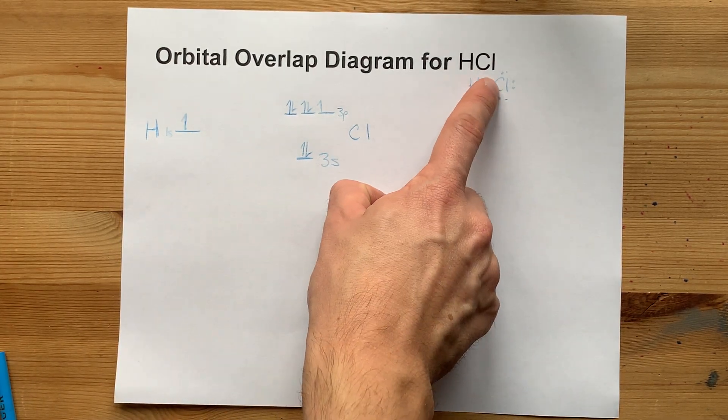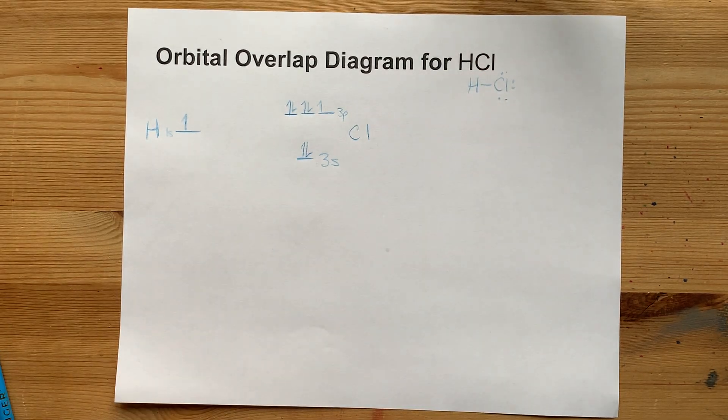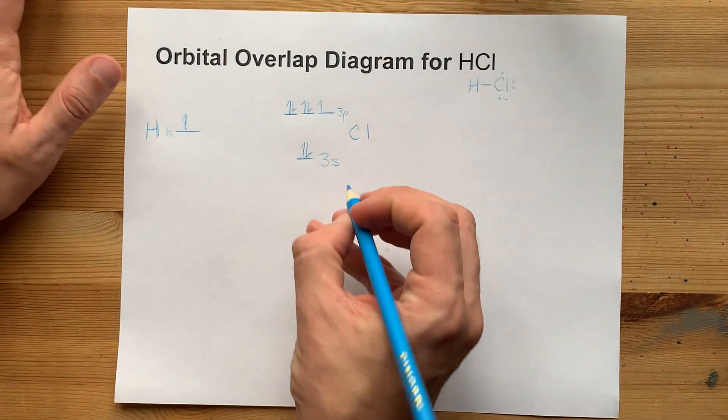So, the chlorine needs 1, 2, 3, 4 hybridized orbitals, which means it sp3 hybridizes.